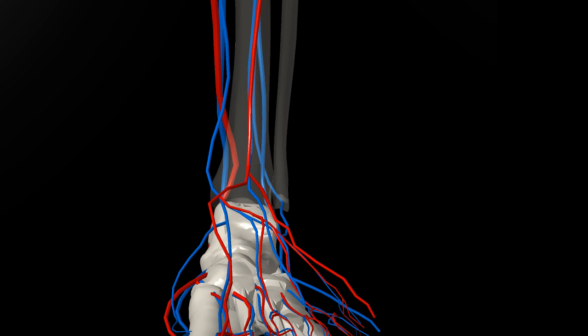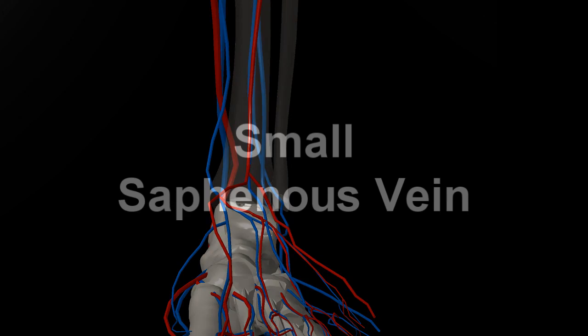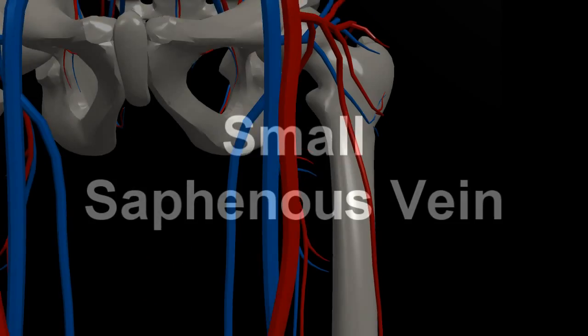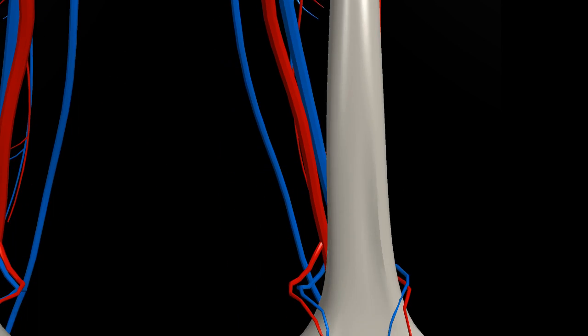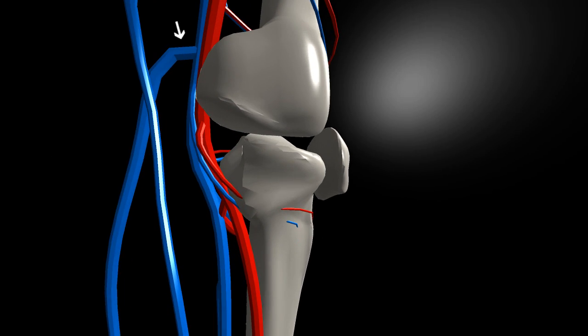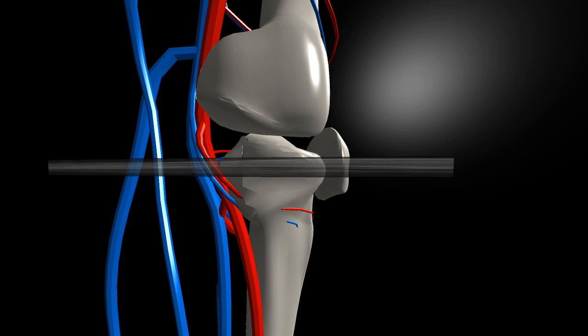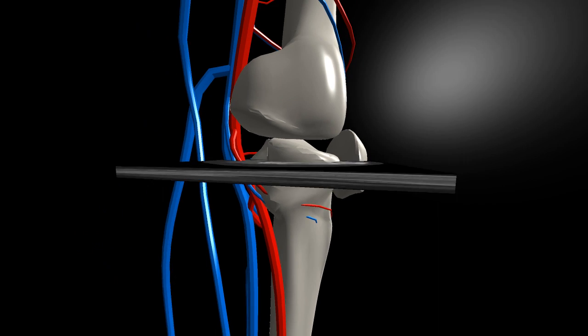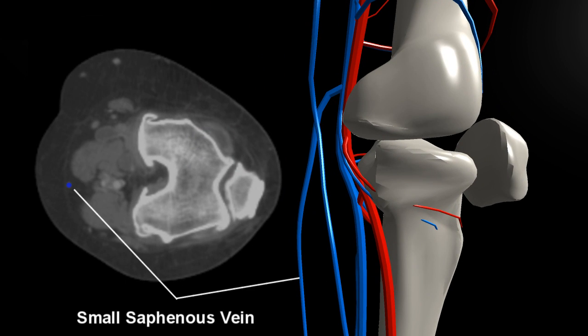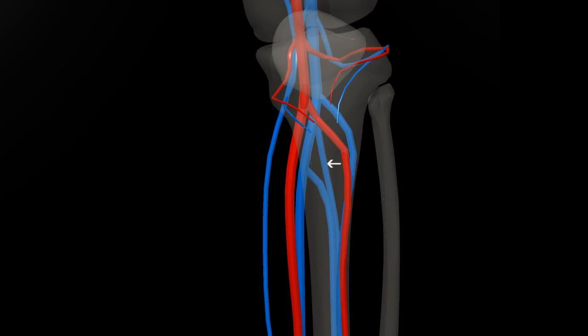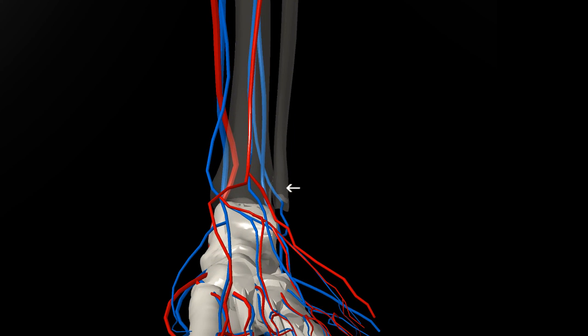The other member of the superficial venous system in the leg is called the small saphenous vein, and comes off the deep system right behind the knee, runs in the fatty tissues under the skin of the calf, and hooks back into the deep system in the region of the outer ankle.